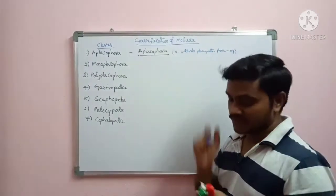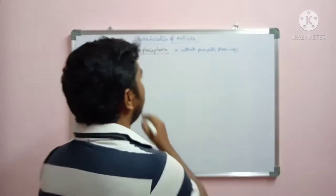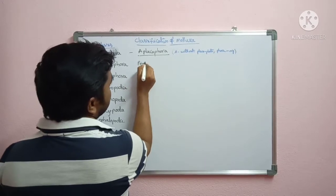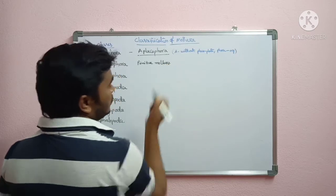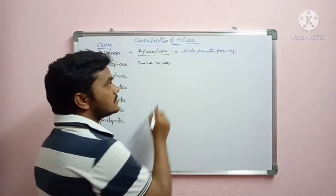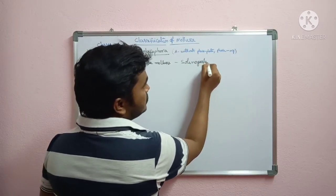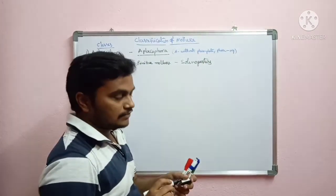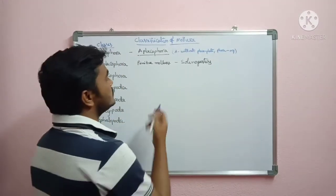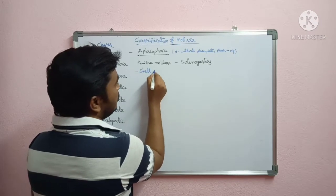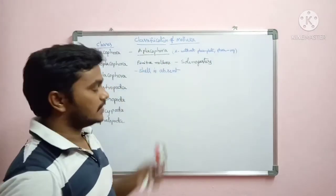The name meaning of Aplacophora: these are primitive molluscans, commonly called Solanogasters. The common name for this class is Solanogasters. Shell is absent in Aplacophora — there is no plate, meaning the shell is absent.